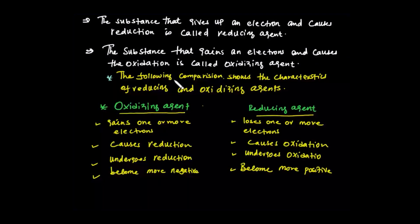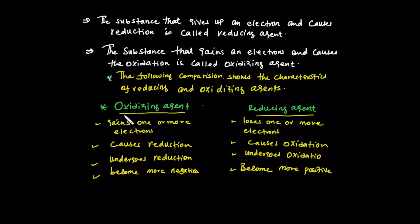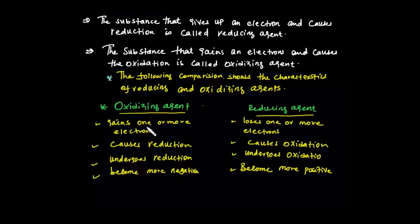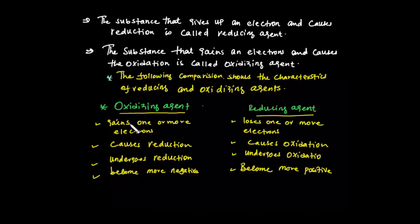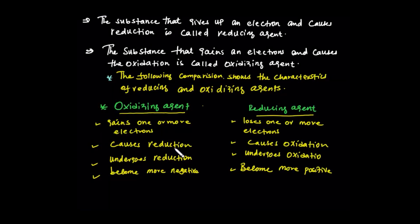The following comparison shows the characteristics of reducing and oxidizing agents. The oxidizing agent gains one or more electrons and is itself reduced. The reducing agent loses one or more electrons and is itself oxidized. The oxidizing agent causes reduction, and the reducing agent causes oxidation. The oxidizing agent undergoes reduction, and oxidizing agents become more negative, while reducing agents become more positive.